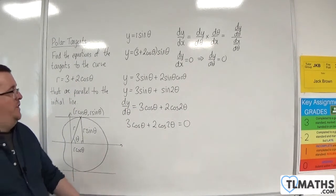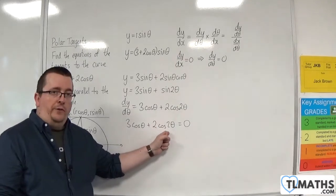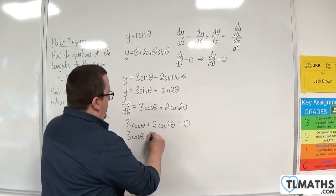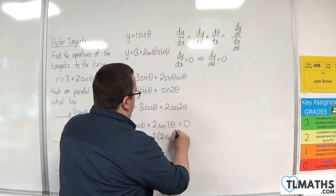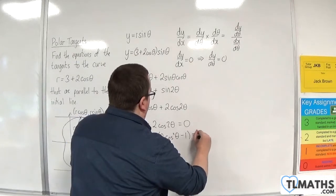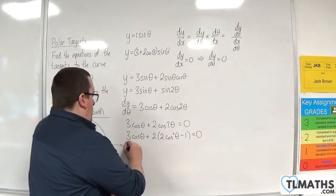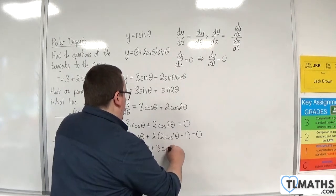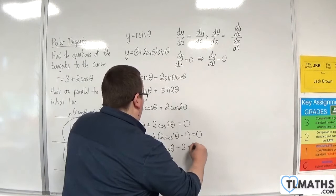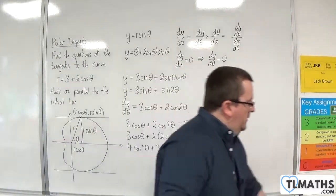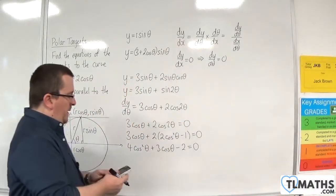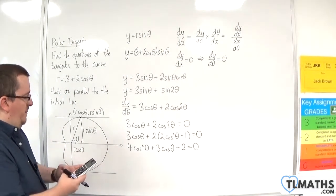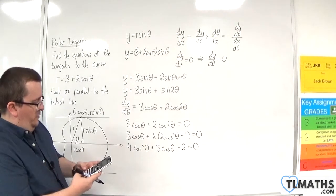Now, I'm going to have to use the double angle formula for cosine 2 theta here. So, I will replace cosine 2 theta with 2 cosine squared theta minus 1. So, I'm ending up with 4 cosine squared theta plus 3 cosine theta take away 2 equals 0. So, let's solve this quadratic equation. So, I'm going to pop it into my quadratic solver. 4, 3 minus 2.